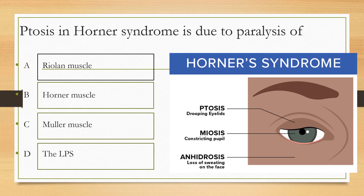Next question is about Horner's syndrome. Ptosis in Horner's syndrome is due to paralysis of which of the following muscles? Option A Violent muscle, option B Horner's muscle, option C Muller's muscle, option D the LPS. The answer is Muller's muscle, because it is a sympathetic palsy. Muller's muscle is involved, leading to ptosis, and pupillary dilatation is blocked, resulting in pupillary constriction.